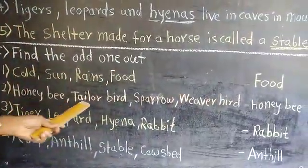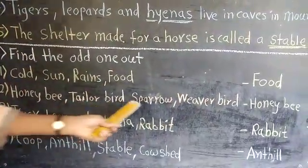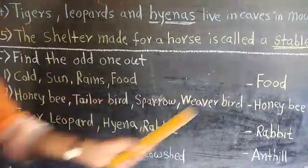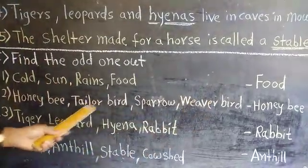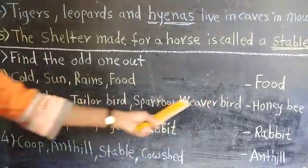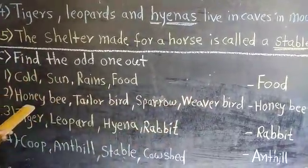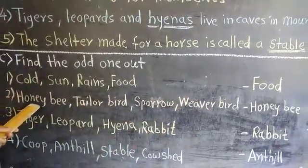Honey bee, tailor bird, sparrow, weaver bird. Tailor bird, sparrow, and weaver bird are birds. Honey bee is an insect. So honey bee is the odd one out.